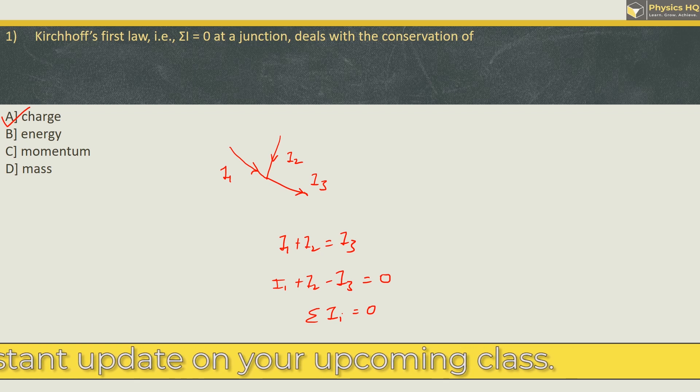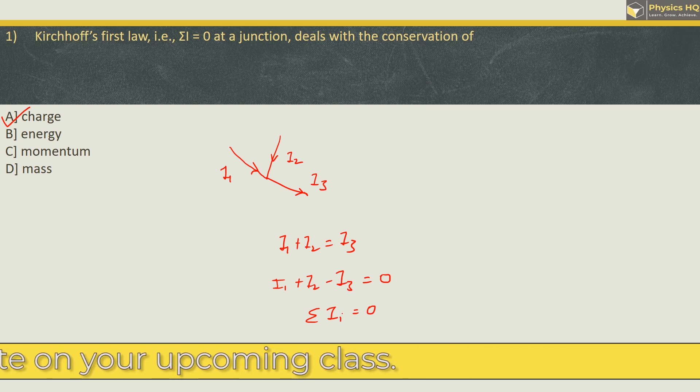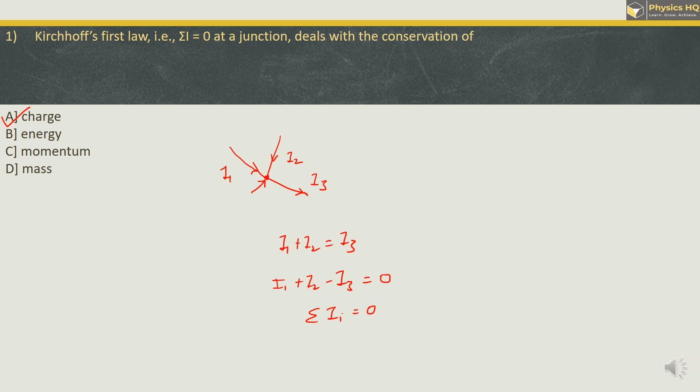Now when current flows means the charge is flowing. So whatever is the amount of charge that is reaching to this junction will be leaving this junction. Therefore this law deals with conservation of charge.